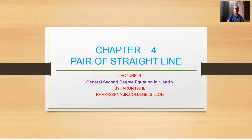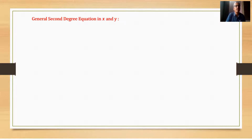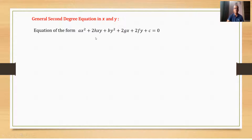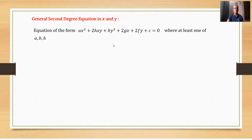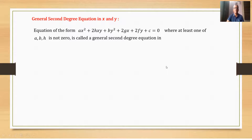Chapter 4, Pair of Straight Lines, Lecture 4. The general second-degree equation in x and y is of the form: ax² + 2hxy + by² + 2gx + 2fy + c = 0, where a, 2h, b, 2g, 2f, and c are constants, and at least one of a, b, h is not zero. This is called the general second-degree equation in x and y.